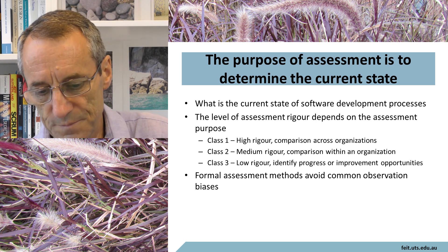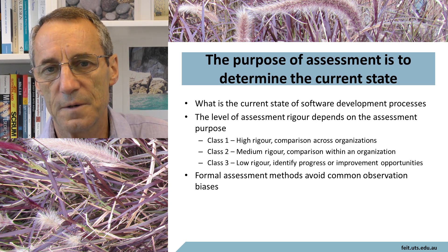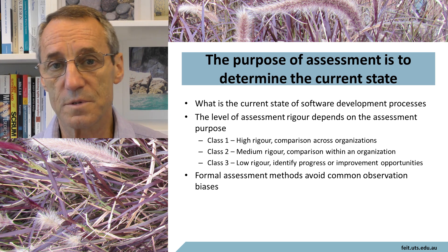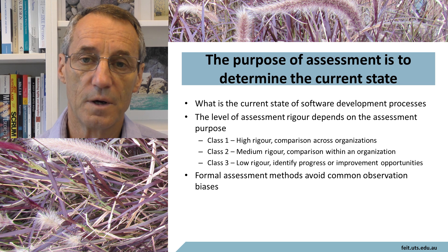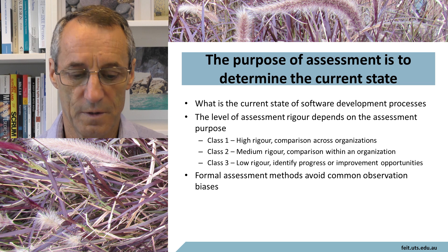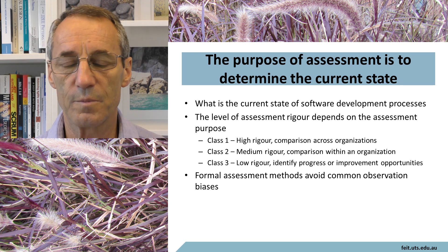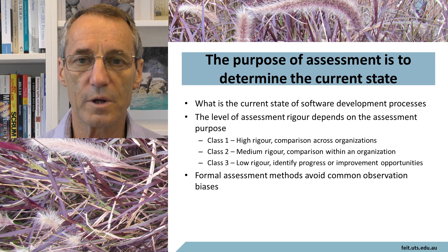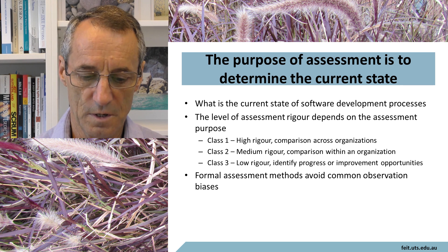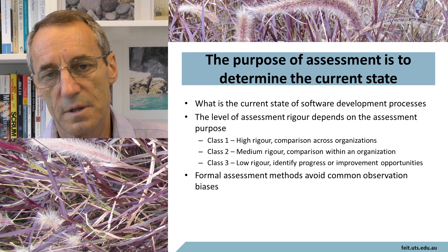Class two is medium rigor — the kind of thing you do for comparing within an organization, either comparing the same part across time to see if you're better than last year, or across different divisions. Not so rigorous, but rigorous enough. Class three is a fairly low rigor assessment, the kind of thing where somebody might do it just to see how they're going — are we up to scratch, can we find any obvious problems?